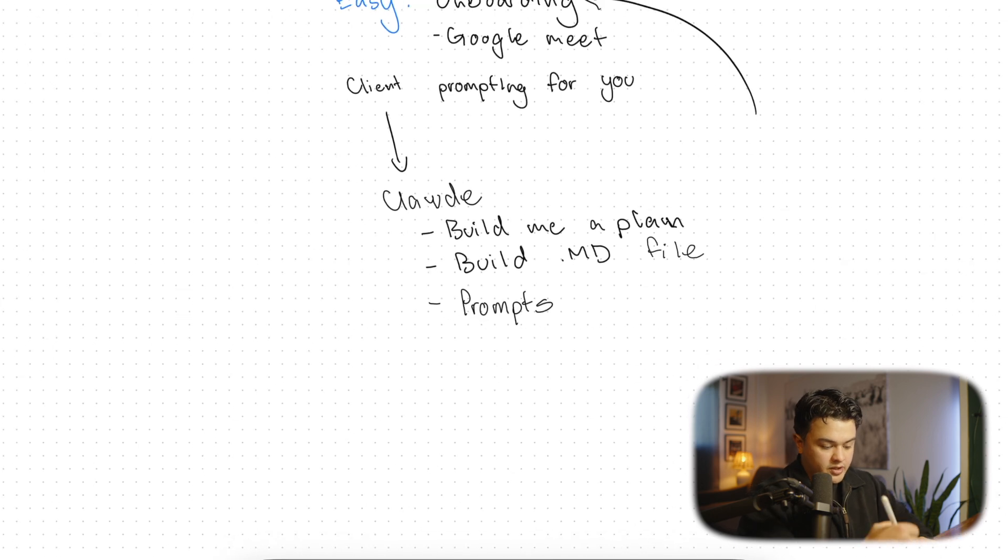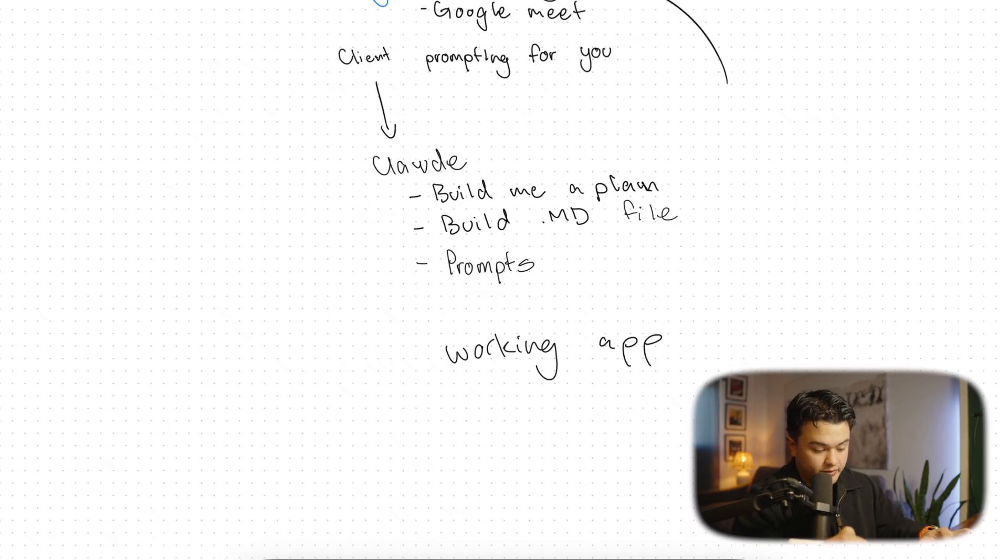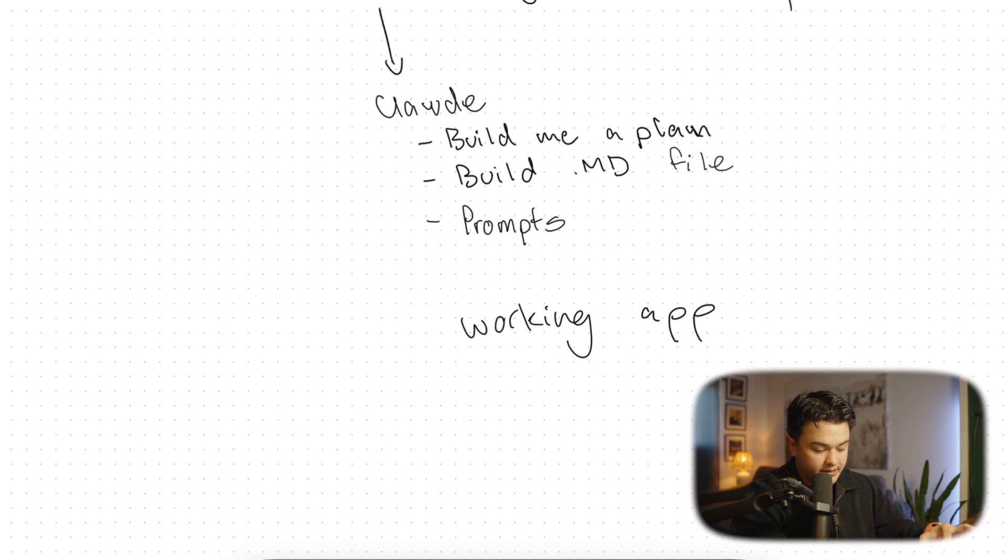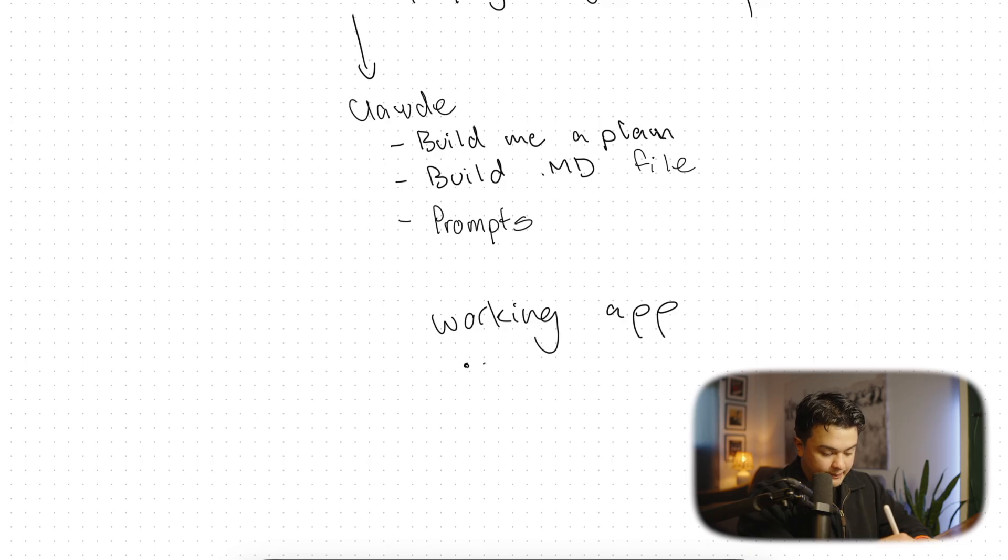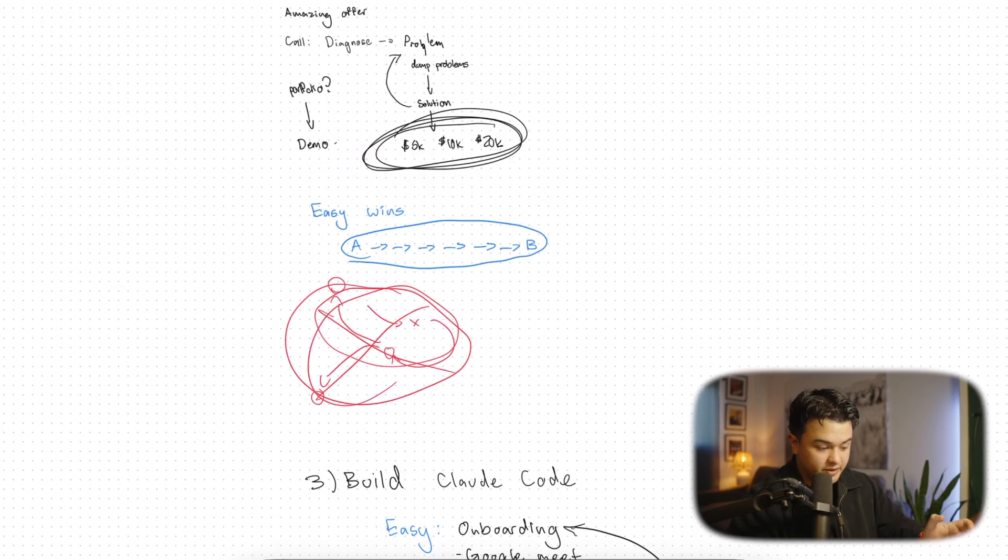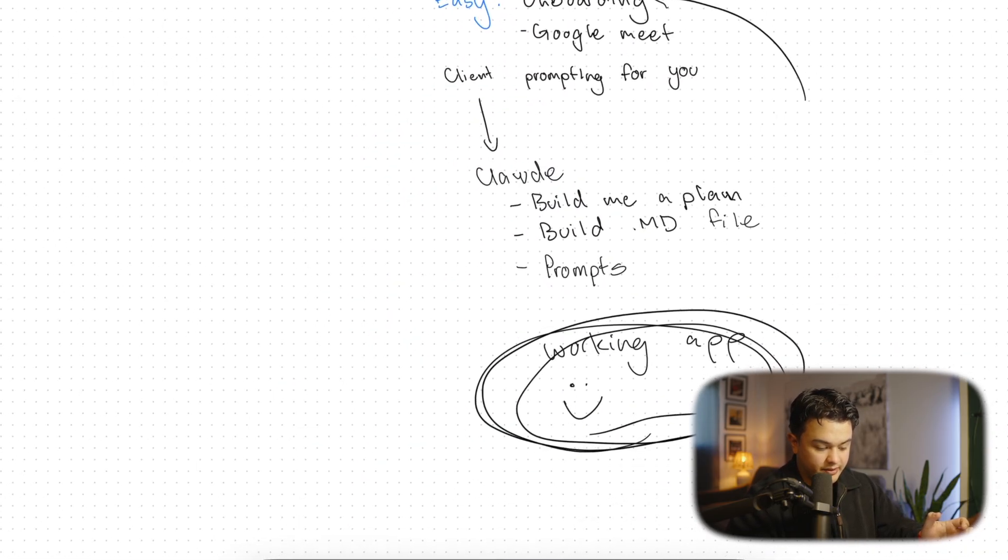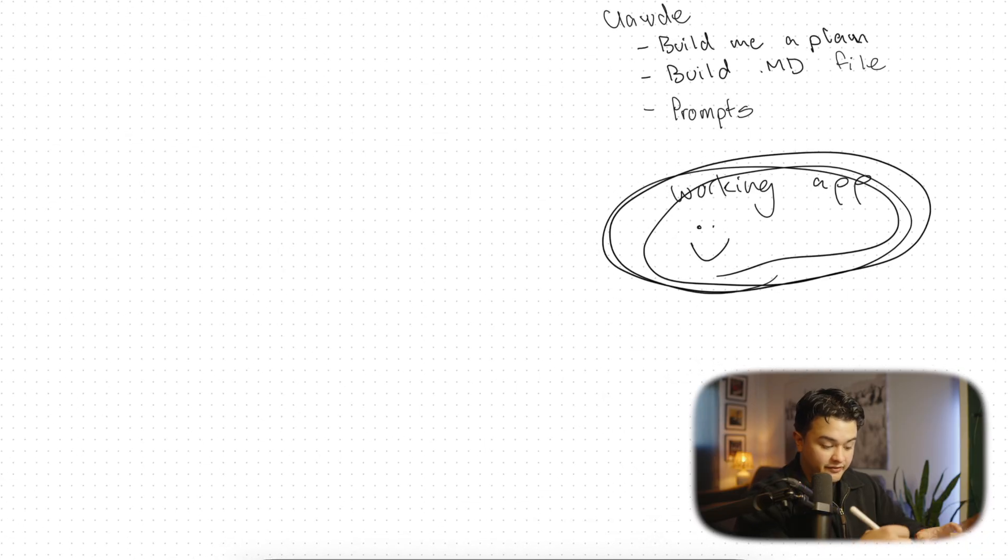By the end of this, you should have a full working app that did not take you too long to build out, probably just a couple of days, that you really didn't do any prompting for that Claude did all for you. Because now it's just a matter of telling Claude to follow the plan. And the client is happy and has paid you money by this point. We have gone from zero to finding a problem to validating the solution to building this out in Claude Code. And now the final step is scale.